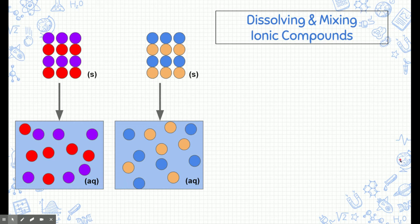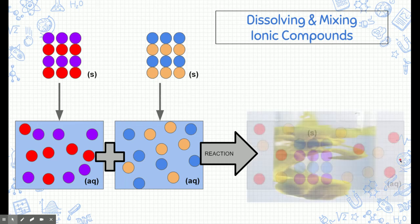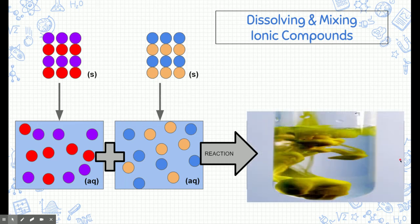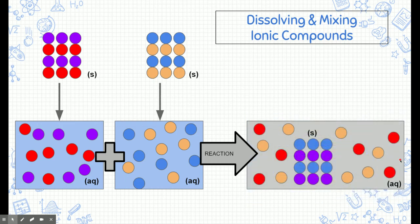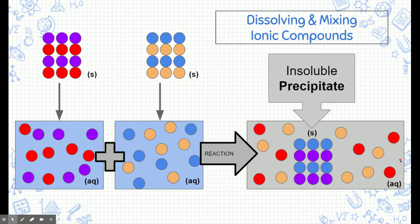The whole point is to show what happens when we mix these two beakers together and cause a reaction. Really cool solid substances form. At the molecular level, the blue molecules from one beaker mixed with the purple molecules from the other beaker and created an insoluble precipitate — a solid substance. Meanwhile, the red and orange molecules also mixed but remained soluble, or dissolved in water.